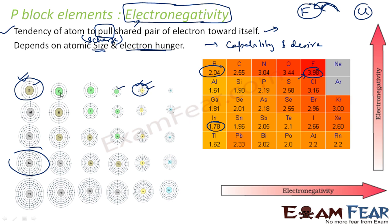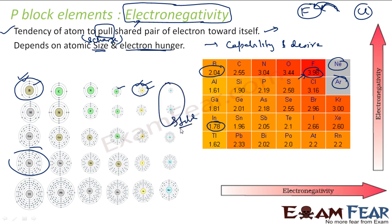This is a general trend. If you go across the period, electronegativity increases because the hungerness increases. If you go up the group, again electronegativity increases because of the effective charge. If you go down a group, the hungerness is the same but the capability increases. Now, neon and argon have almost zero electronegativity because they are stable — they are happy and don't want extra electrons. And this trend breaks in aluminum and silicon.